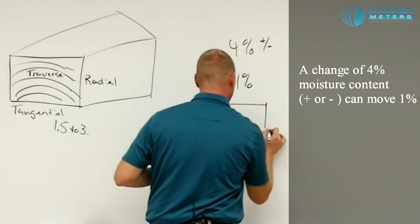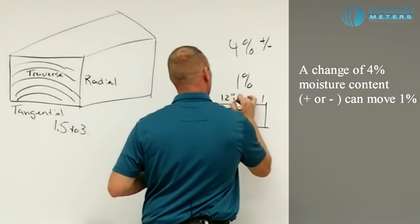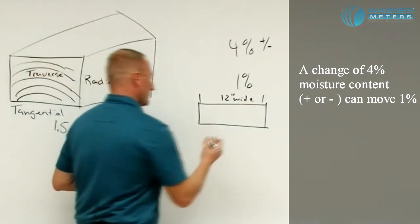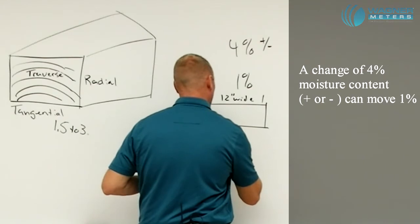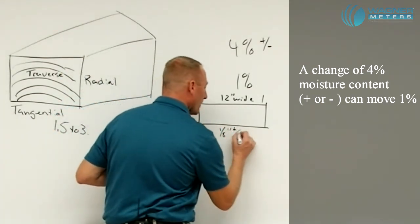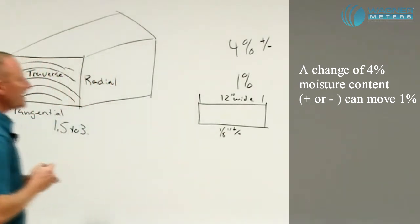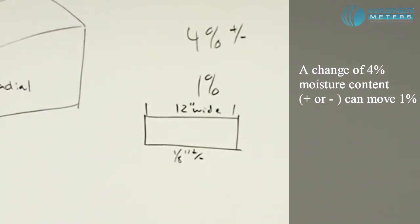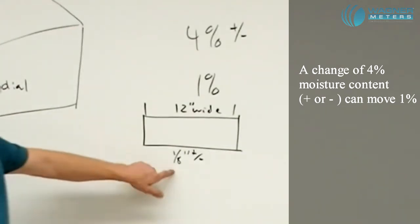1% movement in a 12 inch wide board transfers to nearly 1/8 of an inch difference. So that means a 12 inch wide board that has a change in moisture of 4% can actually change in size 1/8 of an inch. So that's a significant amount of change.